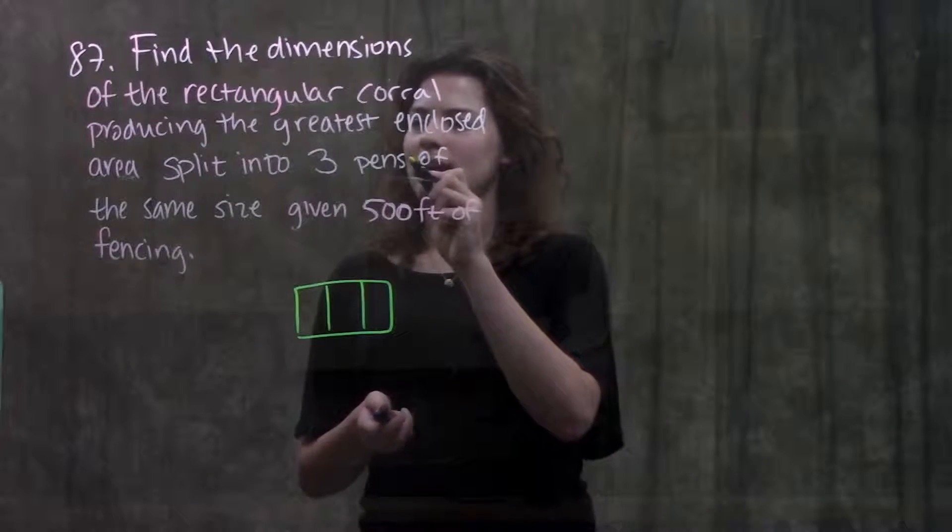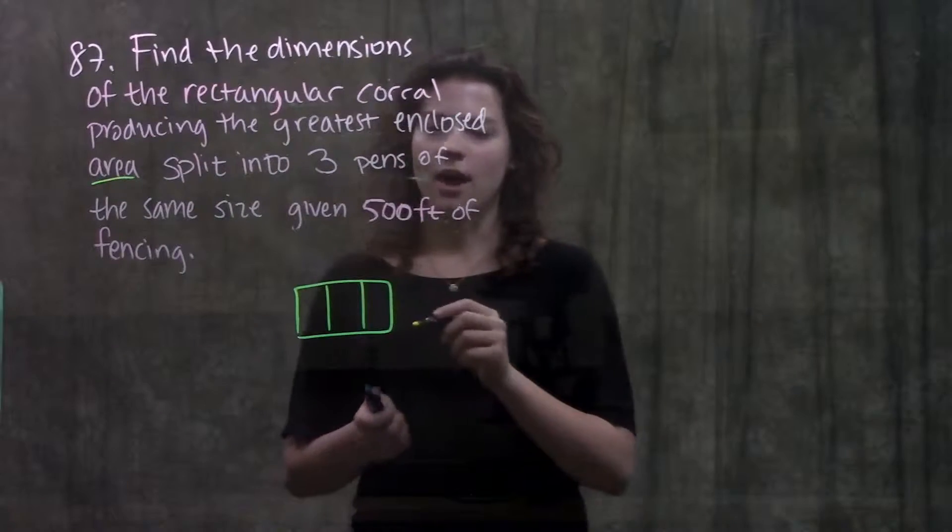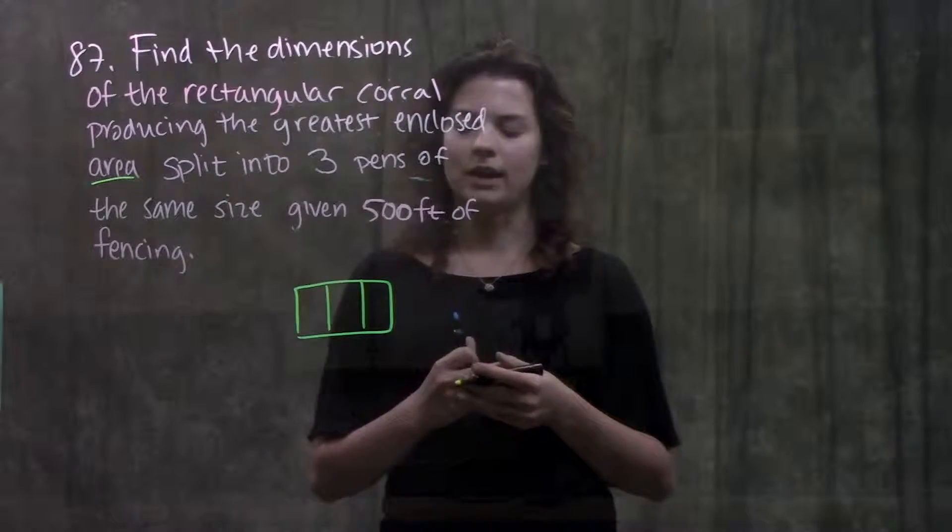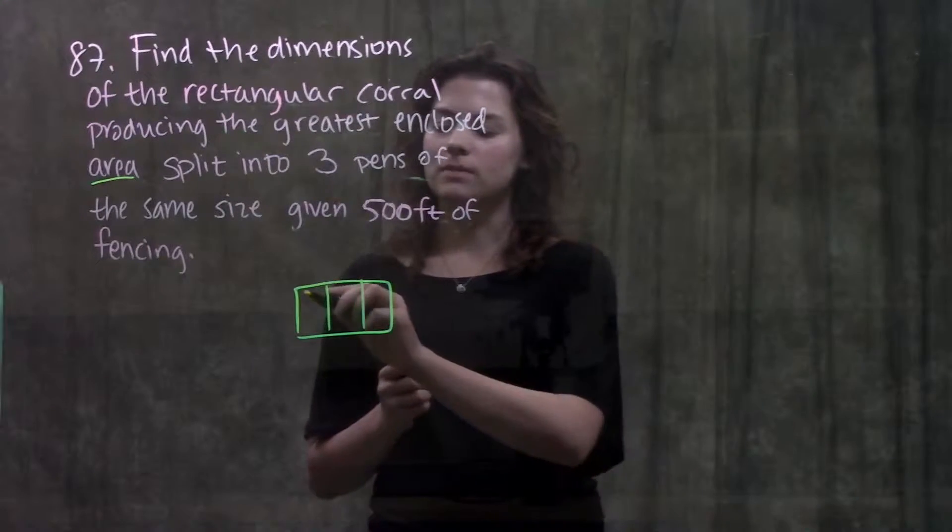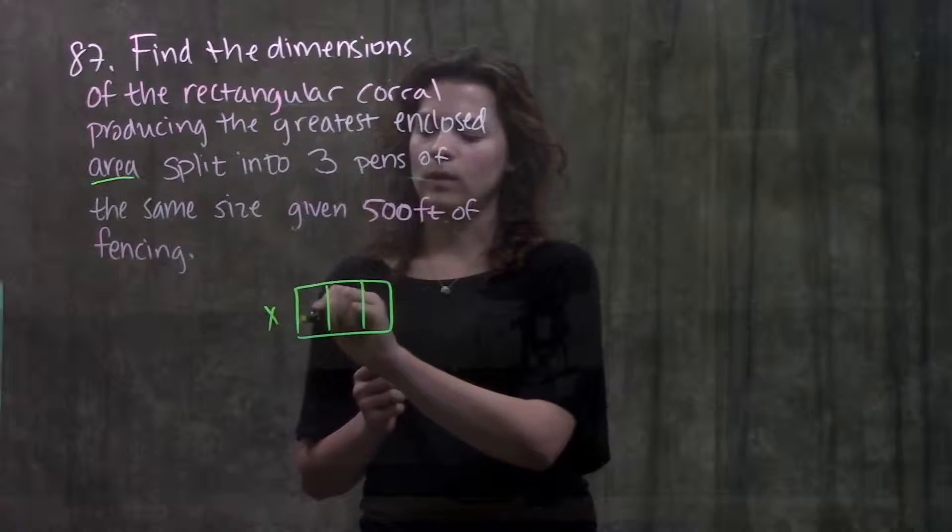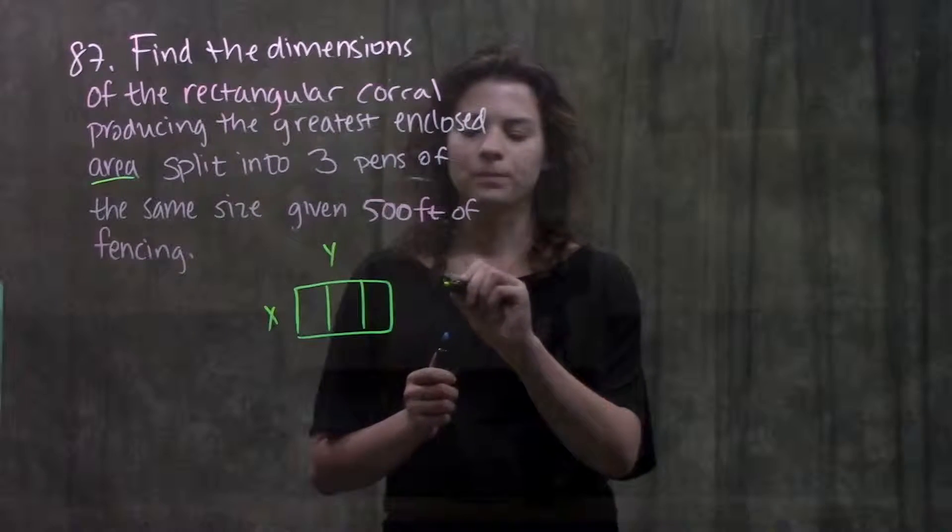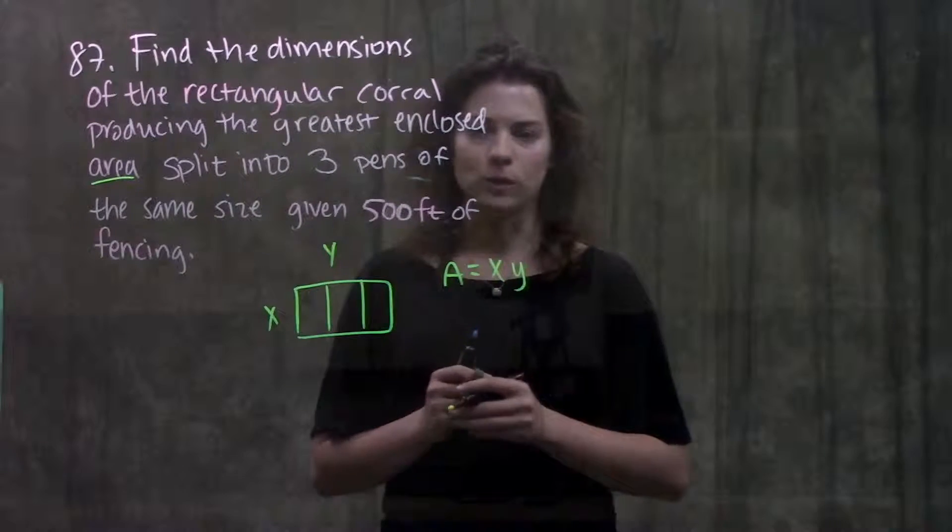And what they're actually asking us for is for the greatest enclosed area of our corral. Alright so now we're dealing with area of a rectangle. Remember to find the area of a rectangle we just multiply the width by the length. In this case I'll name my width x and my length y and so that means that my area of this rectangle is just x times y.